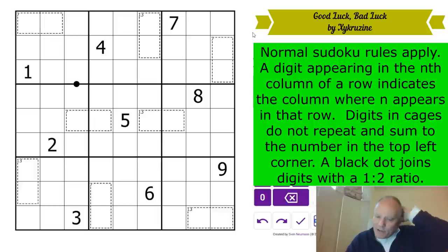What are the rules of Good Luck, Bad Luck? It's an indexing puzzle, isn't it? A digit appearing in the nth column of a row indicates the column where n appears in that row. So if you have a three in this cell - a digit appearing in the nth column, that's a three in the second column - that means that two appears in the third column. So that is the rule. If you have a three in the second column of this row, it means in this row two appears in the third column. Wow, okay, yeah, that is indexing.